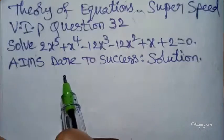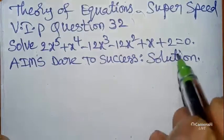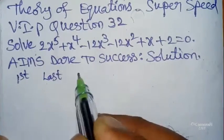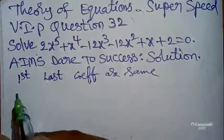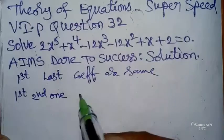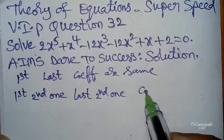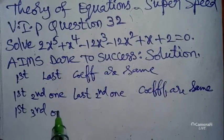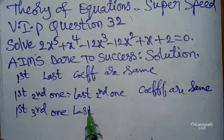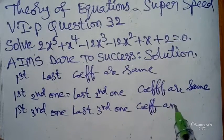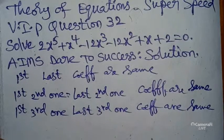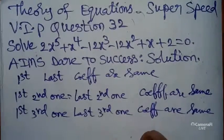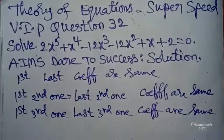Now I want to start the solution. According to the question, you can verify: first to last coefficients are the same, first second and second from last coefficients are also the same, and first third and third from last coefficients are also the same. If you have this pattern, you can follow my short trick. The highest degree is 5.